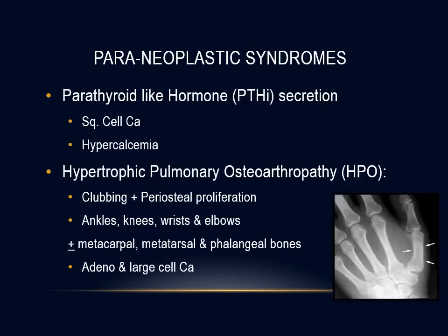Paraneoplastic effects of lung cancer are remote effects not related to direct invasion, obstruction, or metastasis. Hypercalcemia in patients with lung cancer may arise from bony metastasis or, less commonly, tumor secretion of parathyroid hormone-related protein — more commonly seen in squamous cell carcinoma — causing elevated calcium with a suppressed parathyroid hormone level.